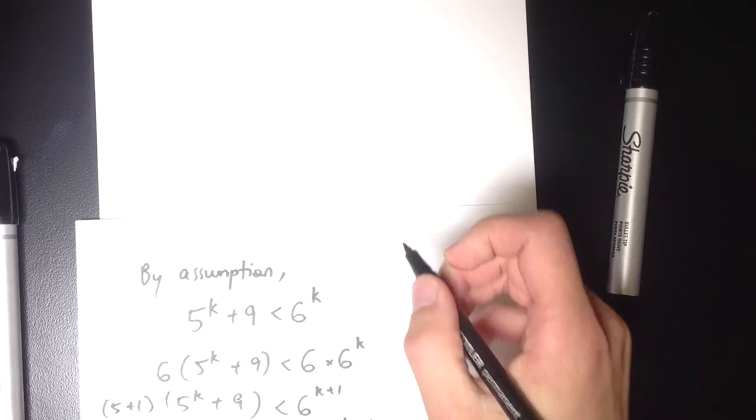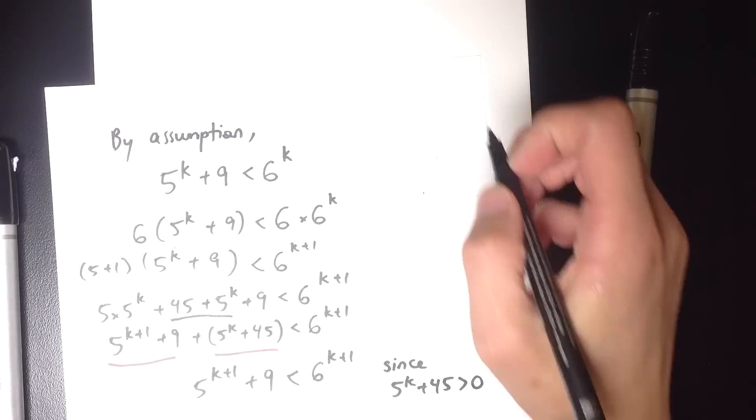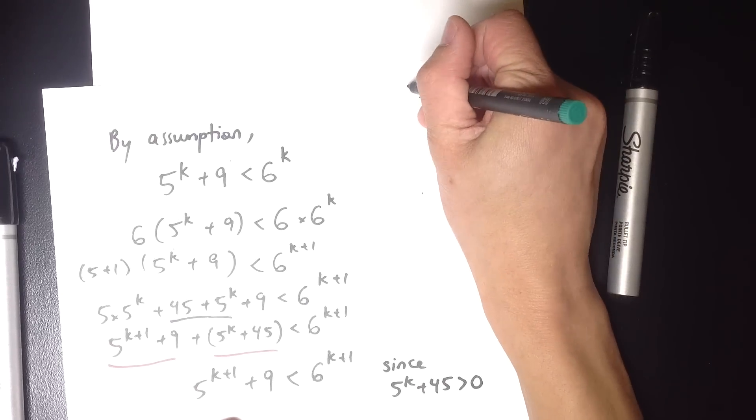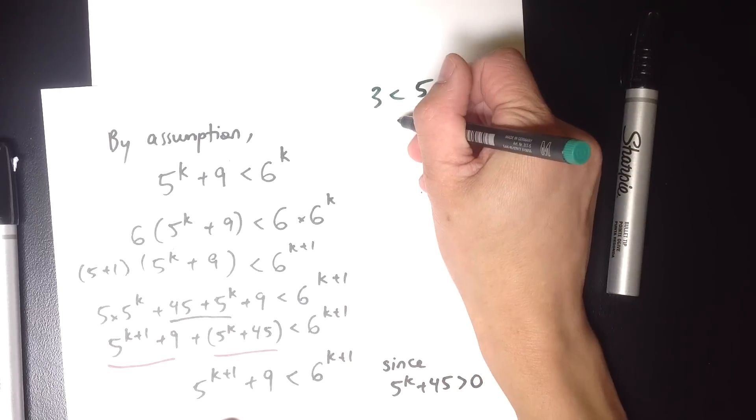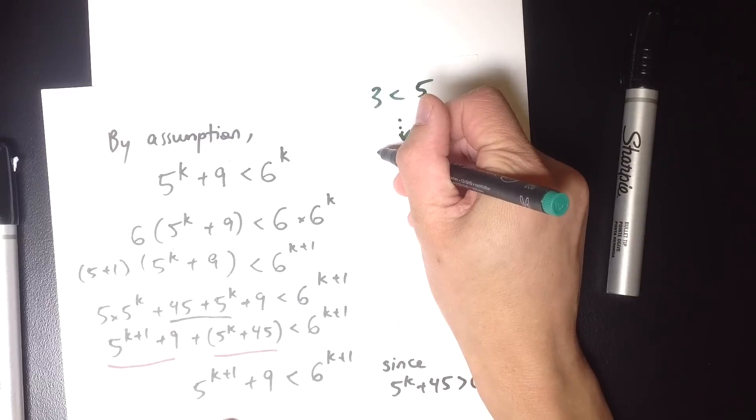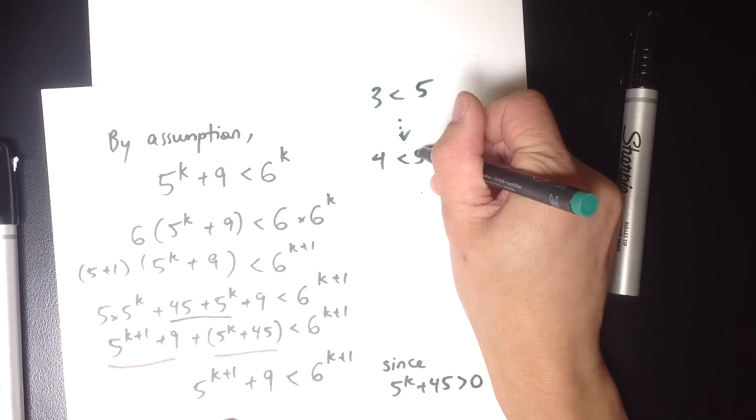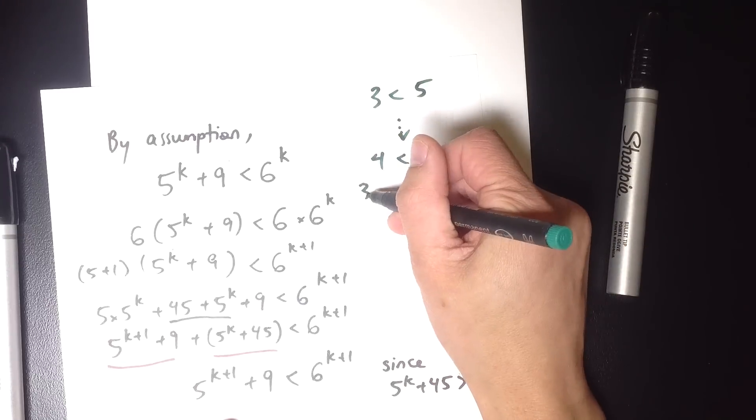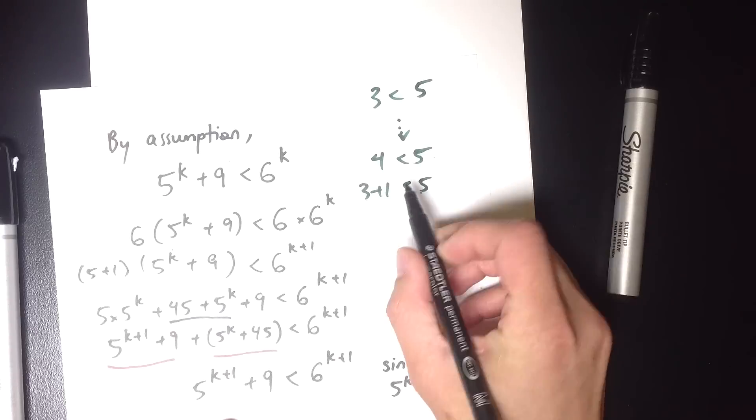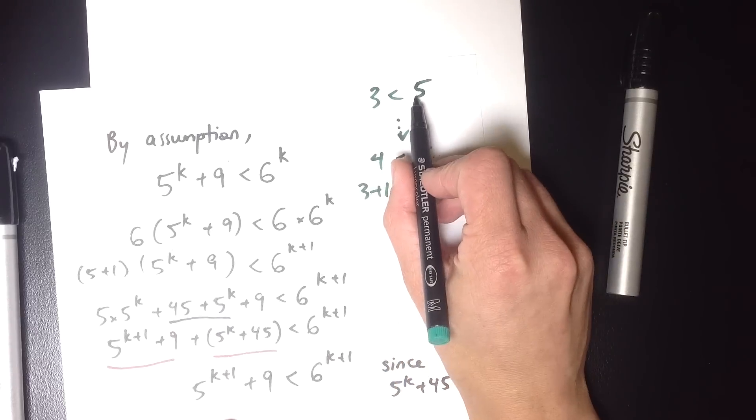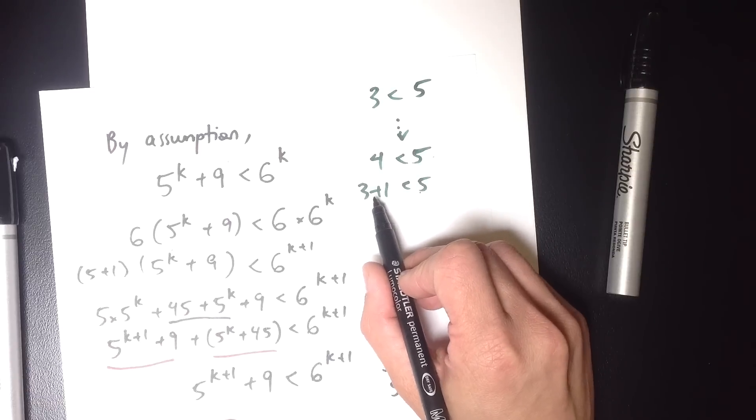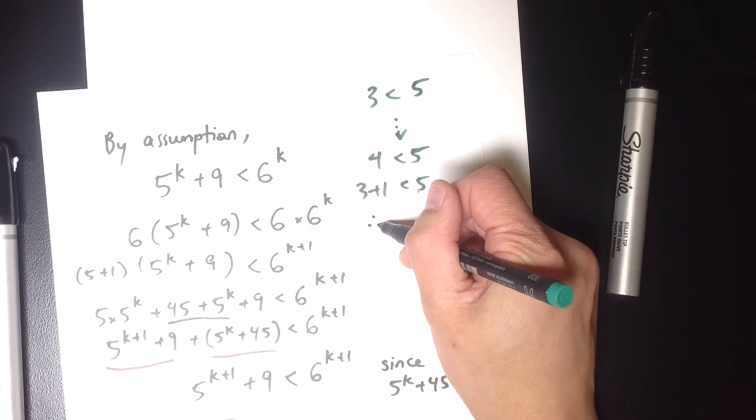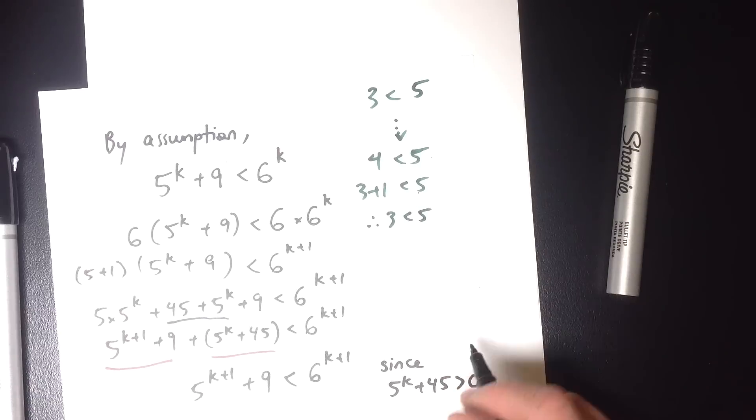Suppose we were trying to prove that 3 is less than 5. And what we eventually got to was that 4 is less than 5. If we can prove that, well, that's 3 plus 1 is less than 5. And that's not the same as what we're trying to prove, but it's better, because 1 is positive. So if 3 plus 1 is less than 5, then surely 3 is less than 5. So that's what I've done here.